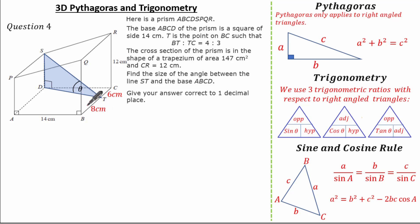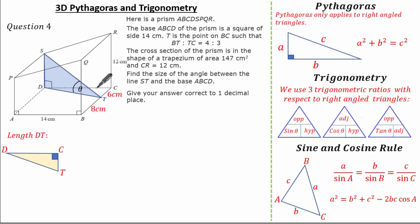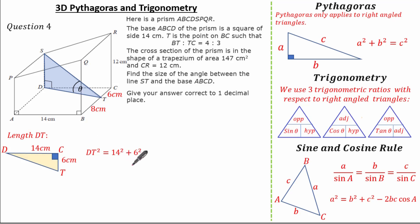Now let's see if knowing these lengths helps. To find a length associated with the triangle I need to find DT. I can spot a right-angled triangle from D to C to T. CT is 6 cm and DC is 14 cm. Using Pythagoras: DT squared equals 14 squared plus 6 squared, which equals 196 plus 36 equals 232, so DT equals root 232, which simplifies to 2 root 58.